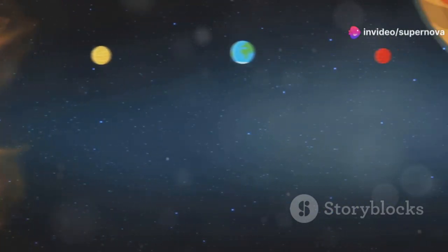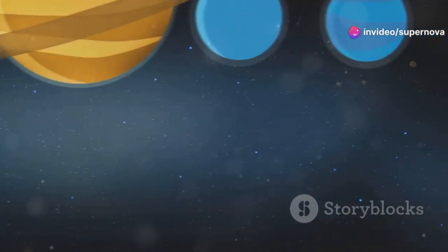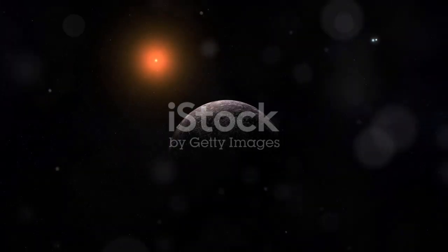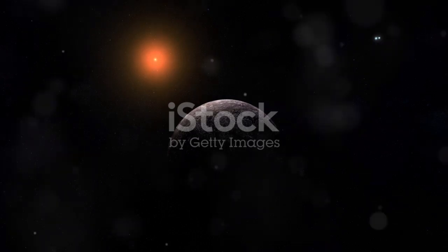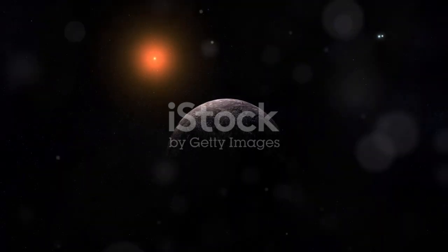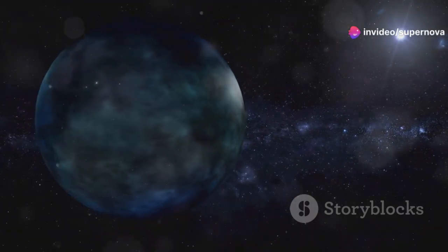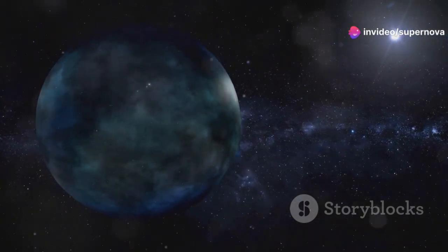This is Proxima Centauri b, or Proxima b for short. It's a fascinating world that orbits the star Proxima Centauri, a red dwarf star much smaller and cooler than our sun. It's the closest known exoplanet to our solar system, making it a tantalizing target for exploration.